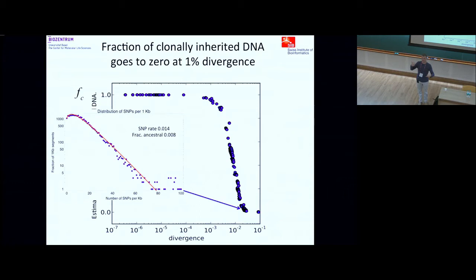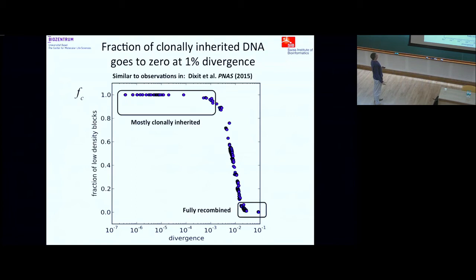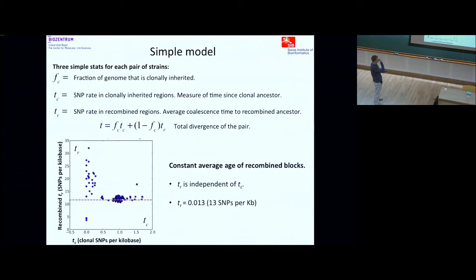For the vast majority of pairs of strains in my collection, the entire genome has been overwritten by recombination. Comparing the DNA sequences of such a pair, there is no DNA left that actually came from their common ancestor — the information has simply been lost, making it impossible to reconstruct the phylogeny. Up to about 10^-3 total divergence, almost everything is clonally inherited, then there's a transition region, and by about 1% you lose all ancestral DNA.